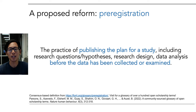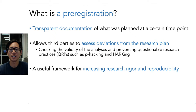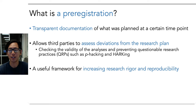So we needed a solution, and the proposed reform was pre-registration. A pre-registration is the practice of publishing the plan for a study — including the research questions and hypotheses, the research design, and data analysis — before the data has been collected or examined. Two important aspects: first, you publish the plan openly and transparently; second, you do this before data collection to limit researcher bias. It is a transparent documentation of what was planned at a certain time point, allowing third parties like peer reviewers to assess deviations and prevent questionable research practices such as p-hacking and HARKing.